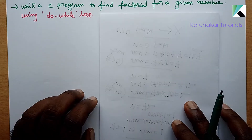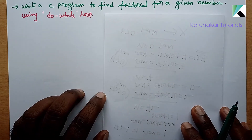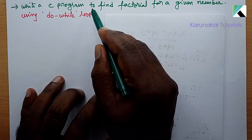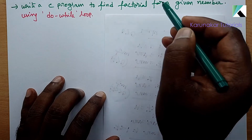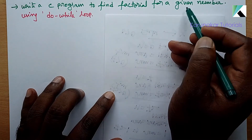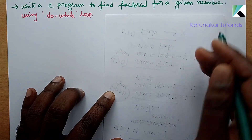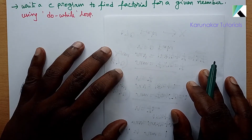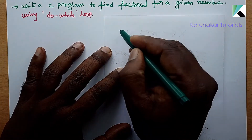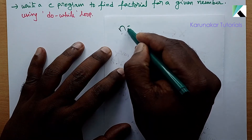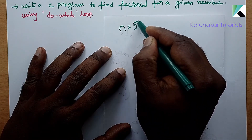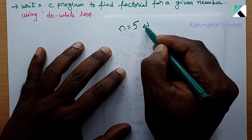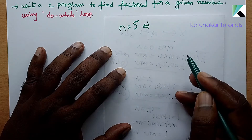Hi everyone, in this video we have one more program to find factorial for a given number. One number is given, then find the factorial. For example, n is equal to 5.